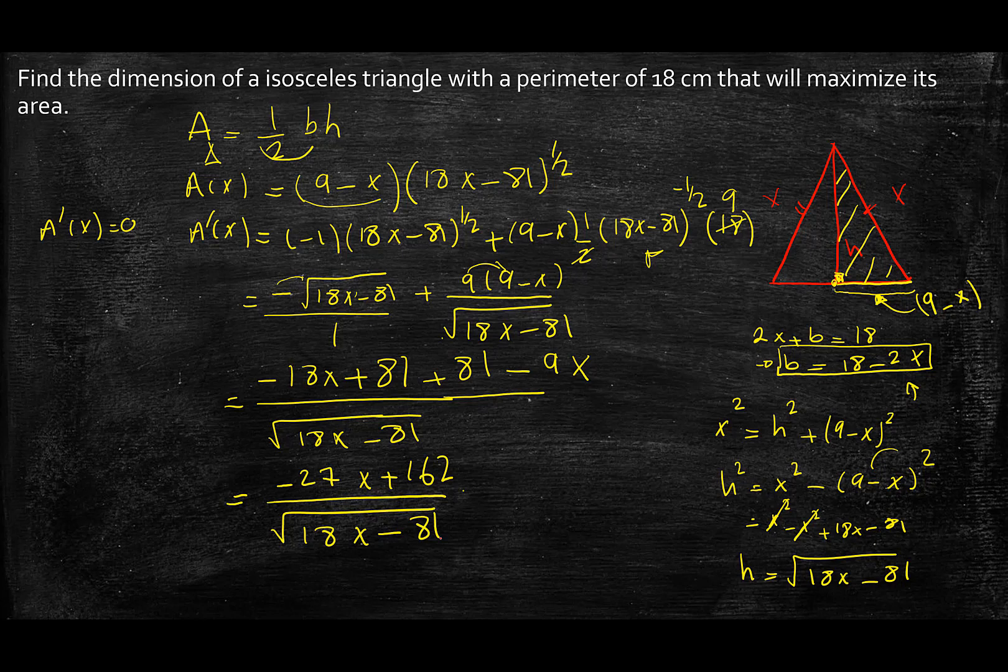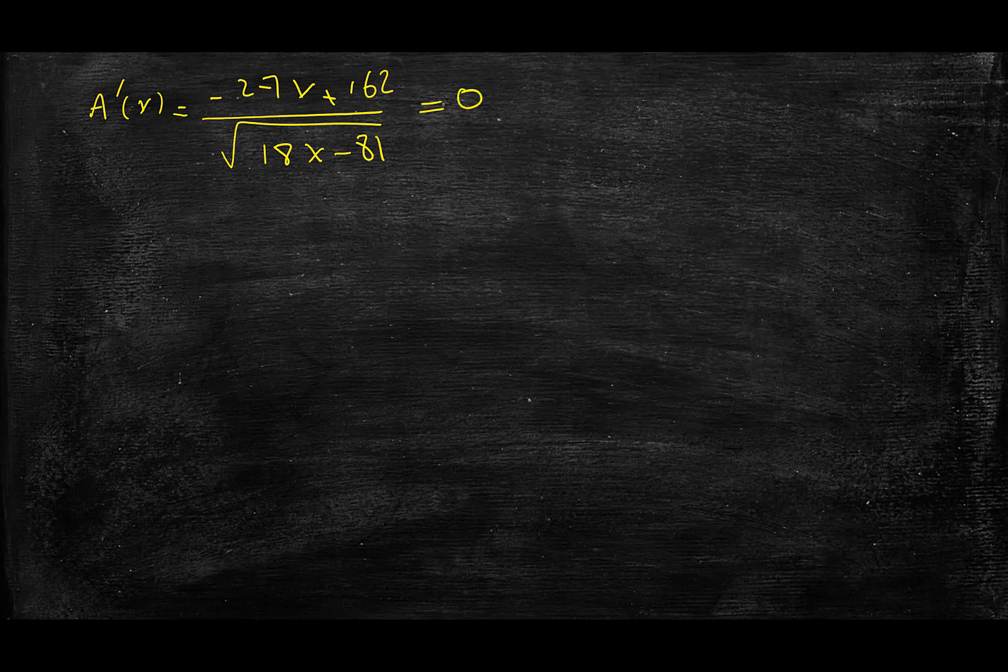Okay, so once that's done, what we need to do is put that equal to 0 and solve for the dimensions. My derivative again was negative 27x plus 162 over 18x minus 81. So I put this equal to 0. When a fraction is equal to 0, the numerator should only be equal to 0. So I have negative 27x equals negative 162, and x equals 162 over 27, which is 6.